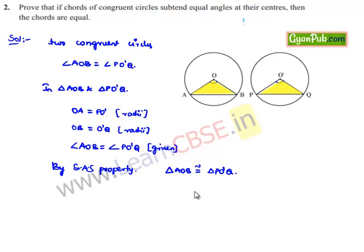Therefore, when two triangles are congruent, their corresponding sides and angles can be equated. Thus, AB is equal to PQ. Hence, it is proved that chords which subtend equal angles at the center are equal in length.